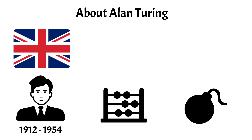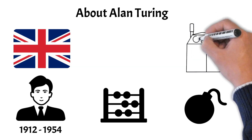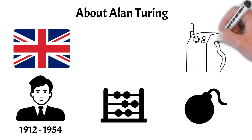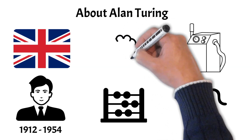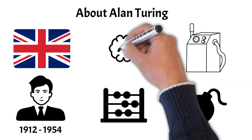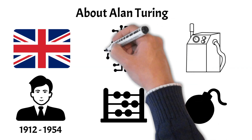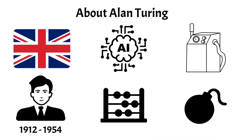Turing proposed the concept of the Turing test, a criterion for determining a machine's ability to exhibit intelligent behavior equivalent to or indistinguishable from that of a human. His legacy still continues to inspire and shape the fields of mathematics, computing, and artificial intelligence.